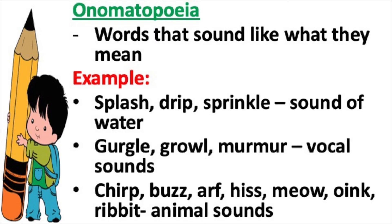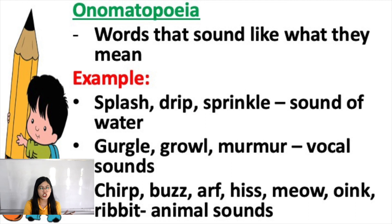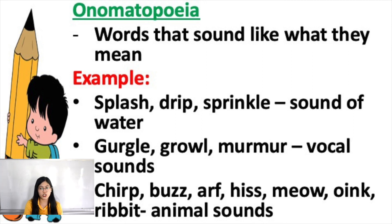Another sound device is onomatopoeia. These are words that sound like what they mean. For example: 'splash,' 'drip,' 'sprinkle' — those are sounds of water. Next: 'gargle,' 'roar,' 'murmur' — those are vocal sounds. And next: 'chirp,' 'buzz,' 'hiss,' 'meow,' 'ribbit' — these are sounds of animals. So those are examples of onomatopoeia.